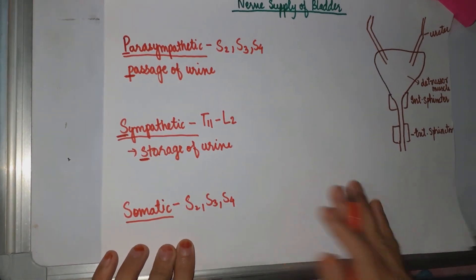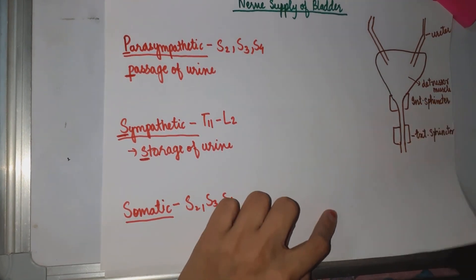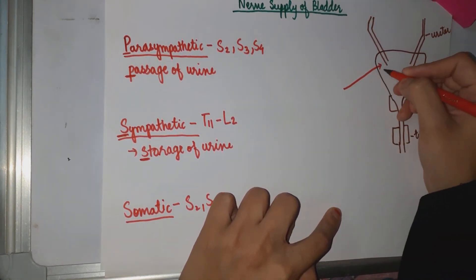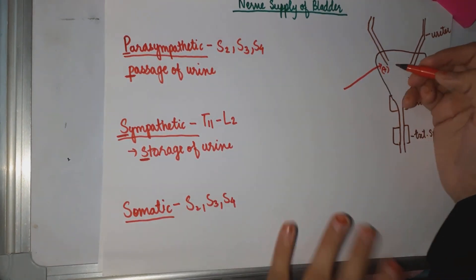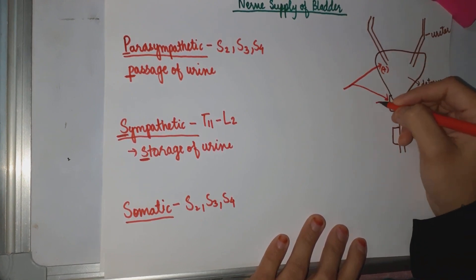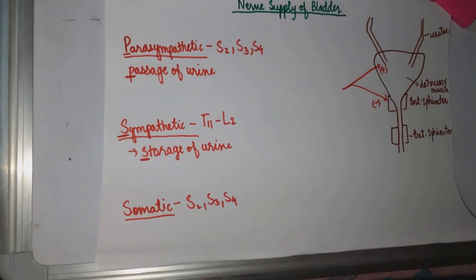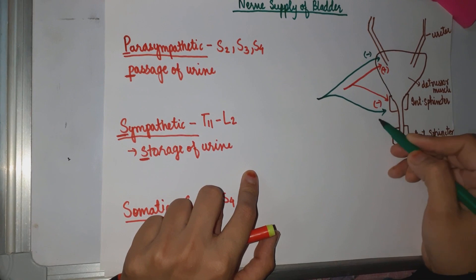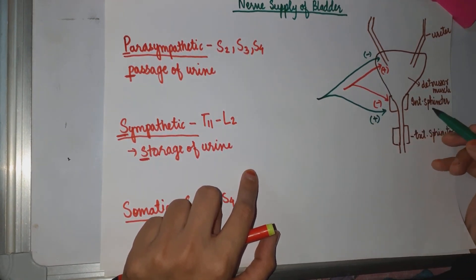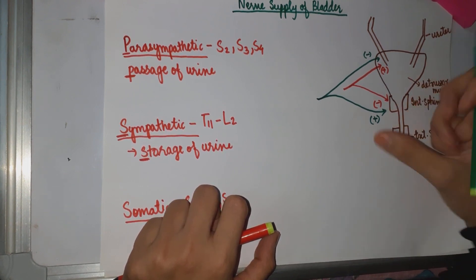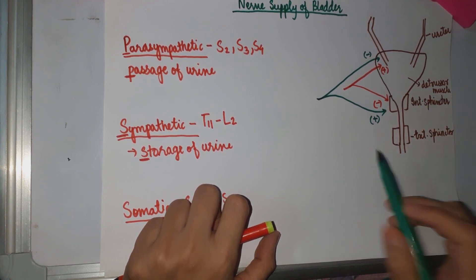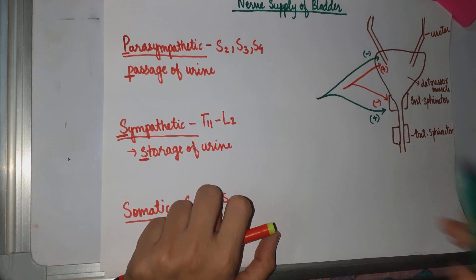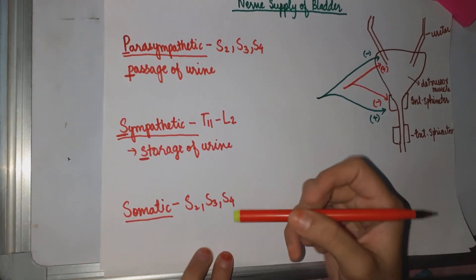For passage of urine, the parasympathetic nerve supply stimulates the detrusor muscles and inhibits the internal sphincter. The sympathetic — shown in green — inhibits the detrusor muscle and stimulates the internal sphincter. When the sphincter is stimulated, it contracts and closes the opening, so when sympathetic stimulation is present, the internal sphincter contracts and does not allow the passage of urine, thus helping in storage of urine.